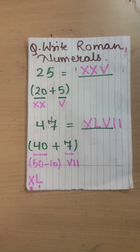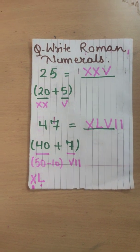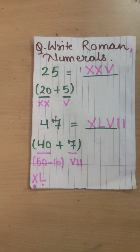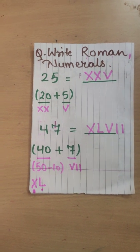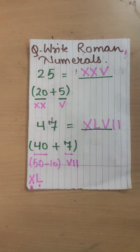Now 47. Let's write it in its expanded form. 40 plus 7. 40 is written as XXXXX. Is it correct? I don't think so.